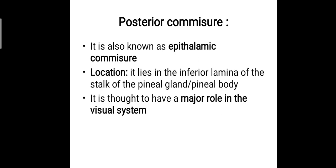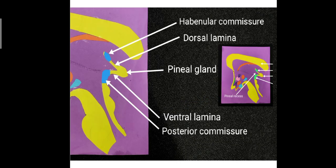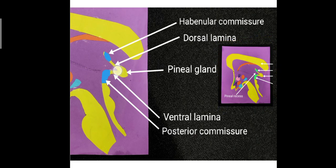The posterior commissure, also known as the epithalamic commissure, is located in the inferior lamina of the stalk of the pineal gland and is thought to have a major role in the visual system. In the magnified image you can see the pineal gland, the dorsal lamina continuous with the habenular commissure, and the ventral lamina continuous with the posterior commissure. This concludes the metathalamus and the epithalamus. Thank you.